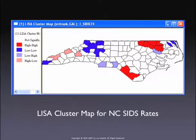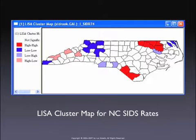We saw the local Moran — a statistic for each location — where only the significant ones are being mapped. The cluster map adds to that and really combines two things: the local Moran with the scatter plot and the four categories of association.